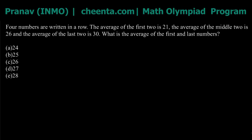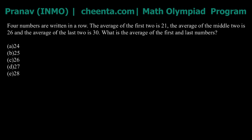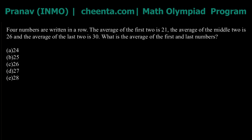So let's continue with the problem. We have four numbers written in a row. The average of the first two is 21, the average of the middle two is 26, and the average of the last two is 30. They are asking us to find the average of the first and last numbers. The way I would approach this is with algebra — since there are four numbers, let those four numbers be a, b, c, and d.